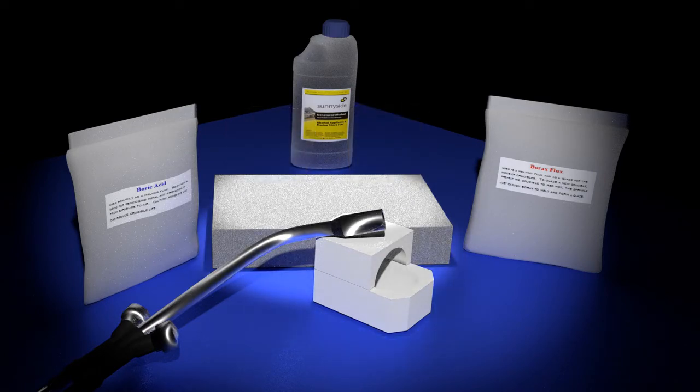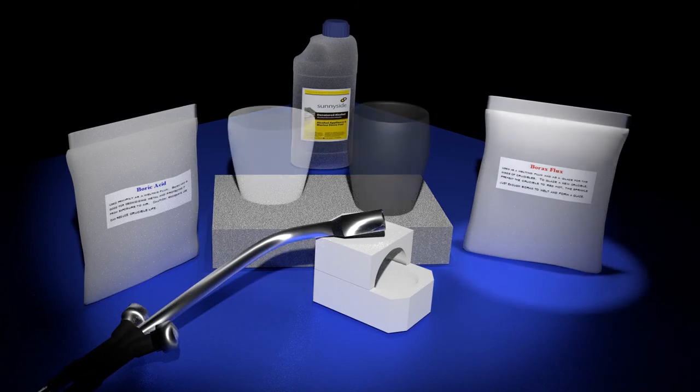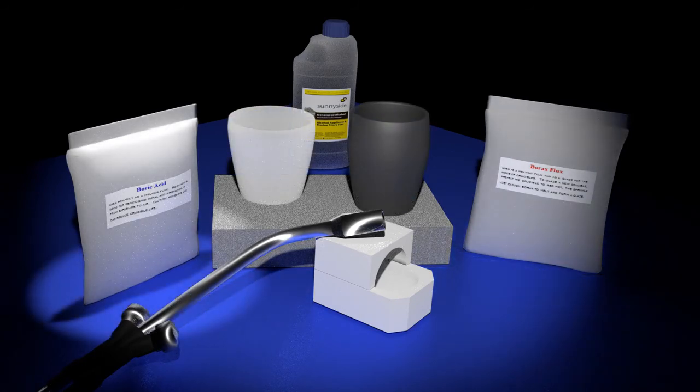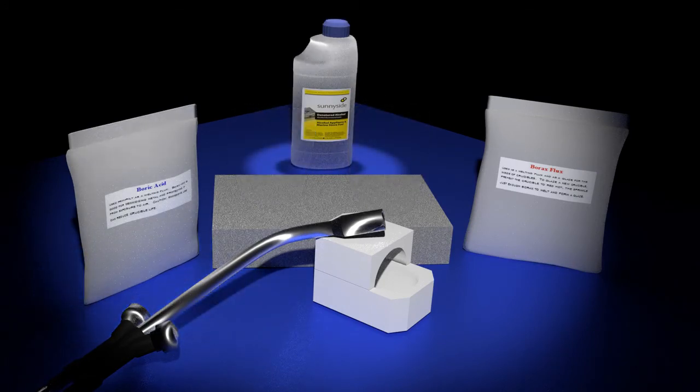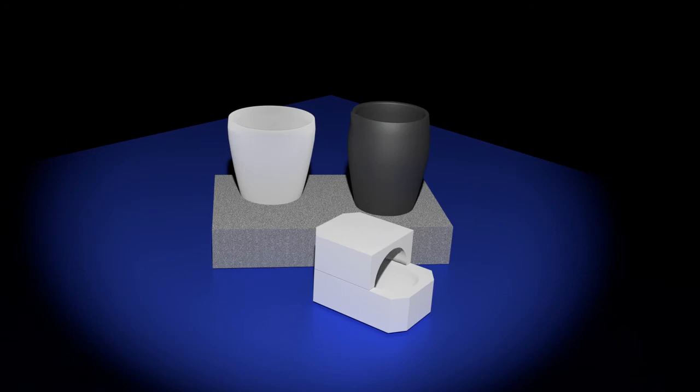Crucible rest: any refractory material like a brick or a cinder block, for example, will do the job. Flux: for this purpose, common fluxes that are typically used include borax, boric acid, or a combination of the two. Alcohol.